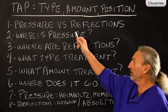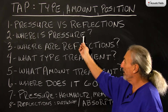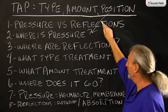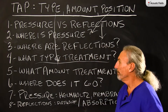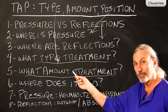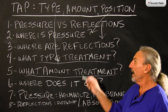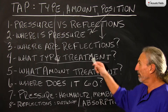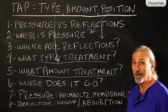We know from past videos that pressure and reflections in small rooms are our two main issues. So we need to define where the pressure is — because that's our position. Where are the reflections? What type of treatment are we going to use, and what amount? Each type of pressure problem, each frequency within that pressure problem, and each type of reflection is going to need the appropriate treatment. We have to figure out all the areas we need to treat: where it goes, what type we're going to use, and how much.